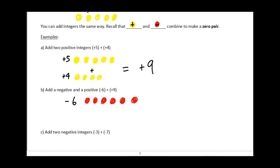And if I want to add to that positive nine, then I'll have nine yellow dots. One, two, three, four, five, six, seven, eight, nine.